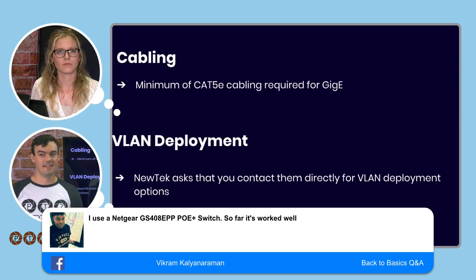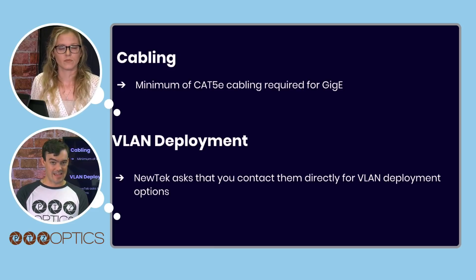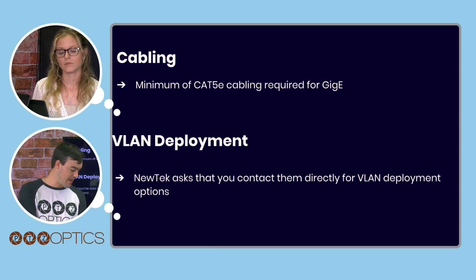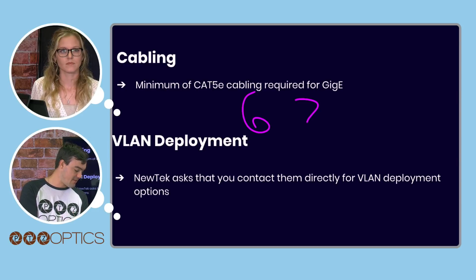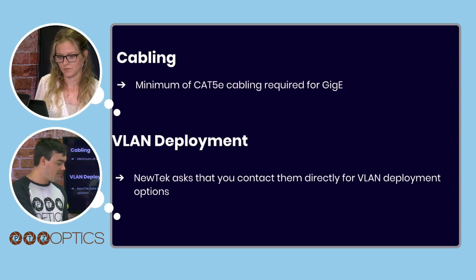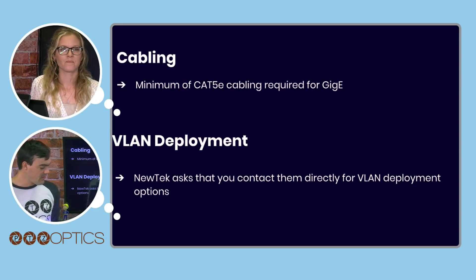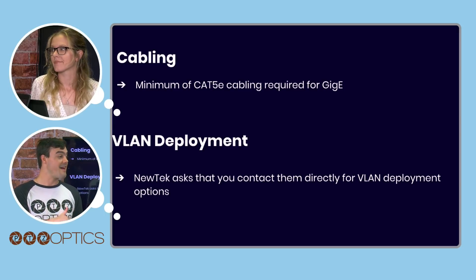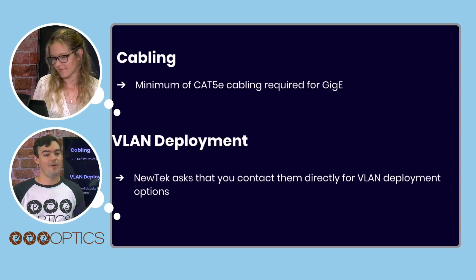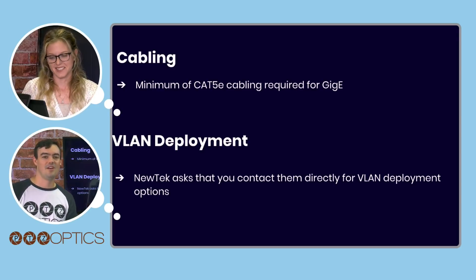For cabling, Cat5e is the minimum — it could be Cat6 or Cat7. Regular Cat5 is only 10/100, meaning 100 megabits maximum, but Cat5e does a full gigabit. We had to rewire our whole office because it had Cat5. If you've got old Cat5, tie a new Cat6 to it and pull it through — you won't be able to use Cat5 for IP video production.